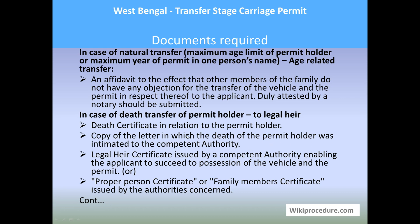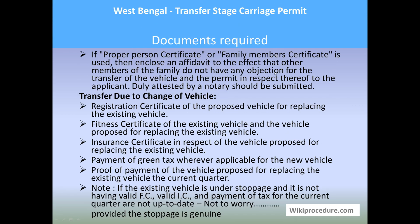You will also need a copy of the letter in which the death of the permit holder was intimated to the competent authority, a legal heir certificate issued by a competent authority enabling the applicant to succeed to possession of the vehicle and the permit, or a proper person certificate or family member certificate issued by the authority. If using a proper person certificate or family member certificate, you must enclose an affidavit stating that other family members consent to transferring the vehicle and permit to the applicant's name, duly attested by a notary public.